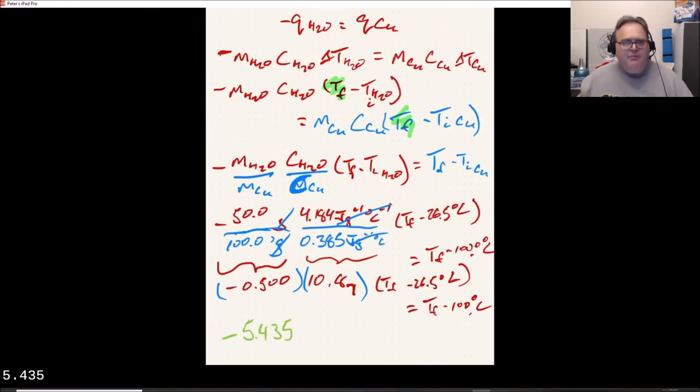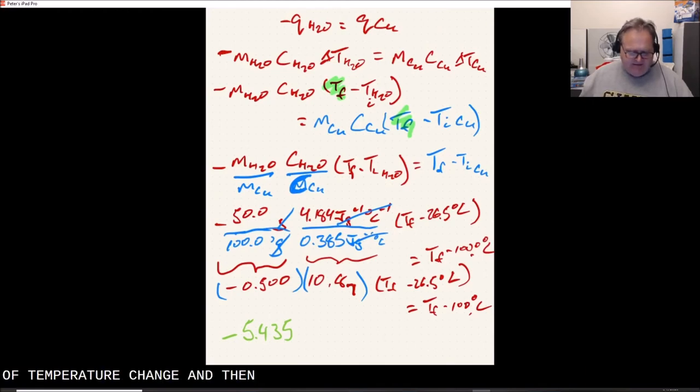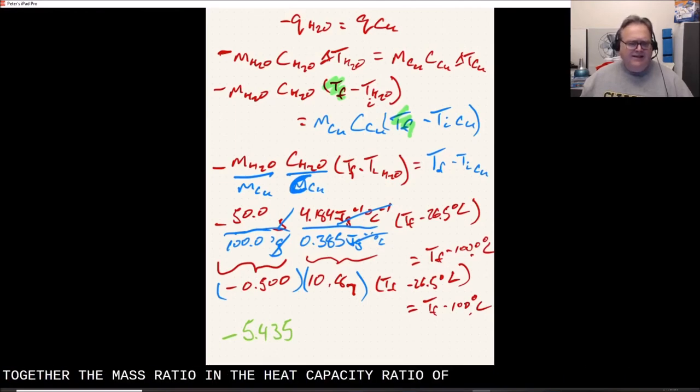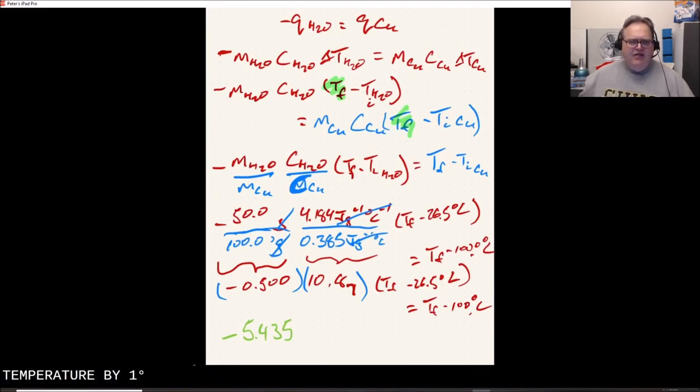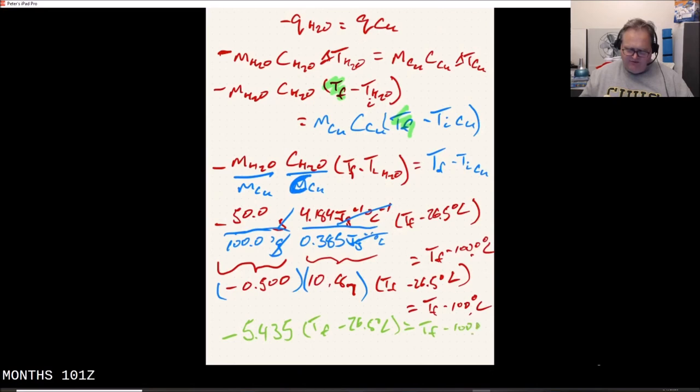And all of this is going to equal Tf minus 100 degrees Celsius on this other side. Let's multiply those ratios together, our minus 0.5 times our 10.87. And what we find is minus 5.435. So there are two pieces: the difference in heat capacity and then the masses.